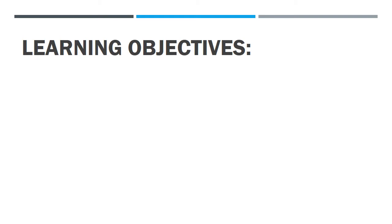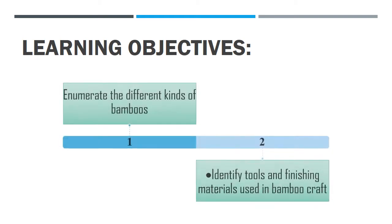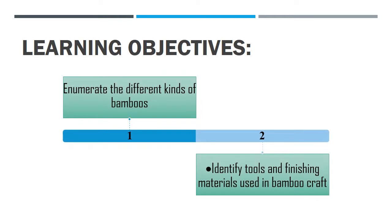So at the end of the lesson, the students are able to enumerate the different kinds of bamboos. The second one, the students are able to identify tools and finishing materials used in bamboo crafts. So these are the learning objectives that we need to attain at the end of the discussion.